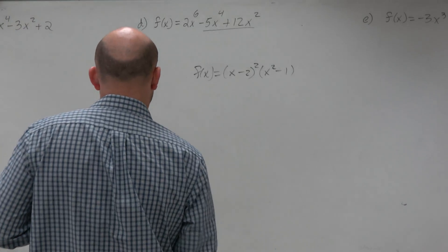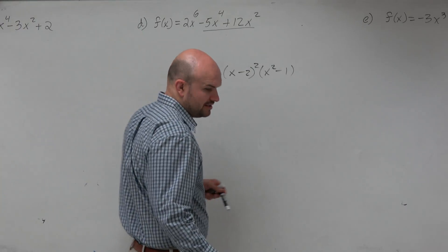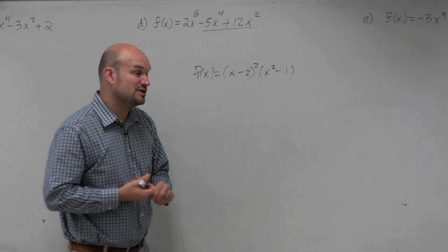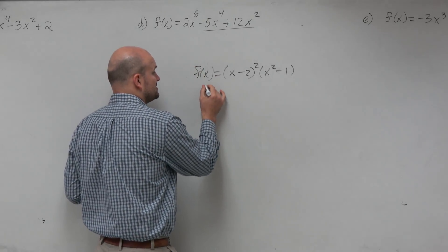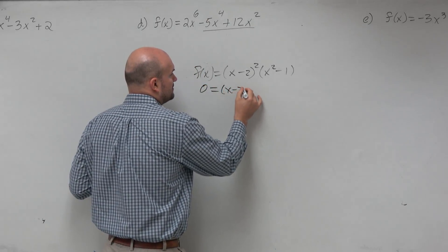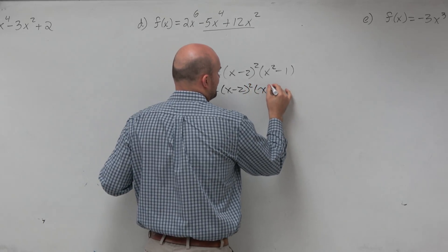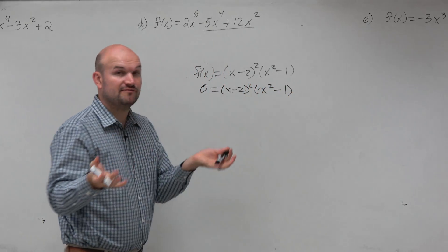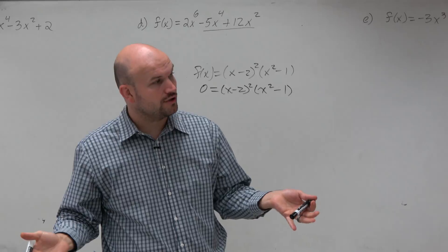So we have an equation. A couple things that we talked about here with knowing this equation. First thing, if we're trying to find the zeros, we're going to set this equal to 0. And therefore, that follows the definition of finding the zeros - setting the function equal to 0. And now we just need to go ahead and solve.